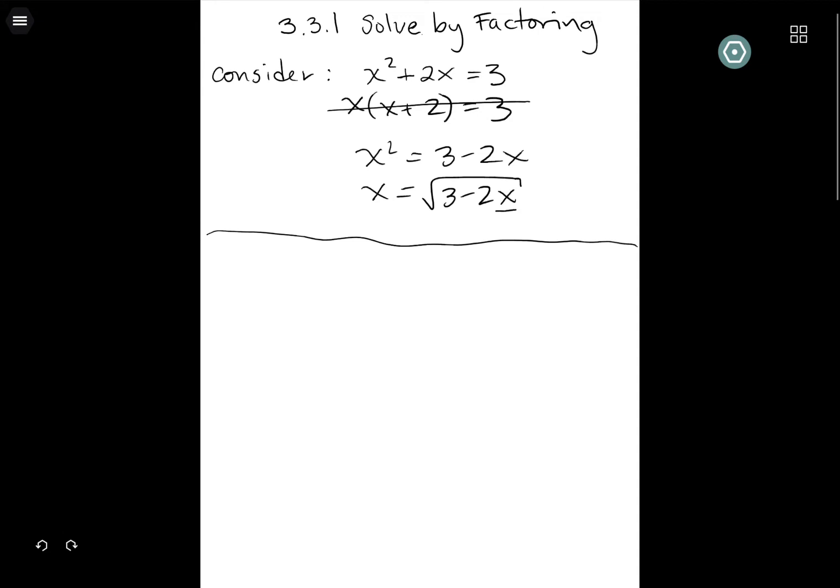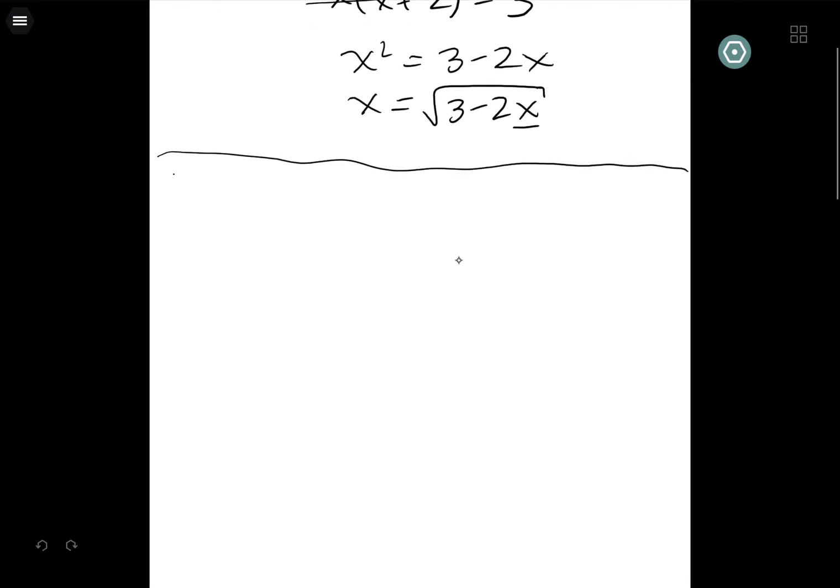I'm actually going to backpedal and give you the key to solving this problem first, and then we'll jump into some examples. There's this fact about numbers called the zero product property. I don't care if you remember what it's called, I promise I'll never quiz you on the name of it, but I want you to be really clear on what it says. It says if you multiply two things together and you get zero, so if a·b = 0, then a equals zero or b equals zero.